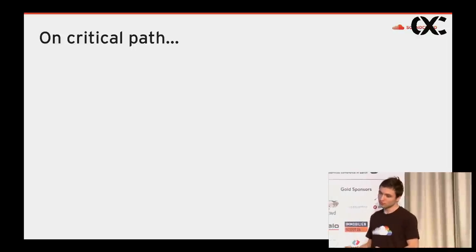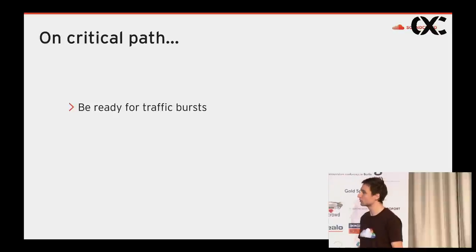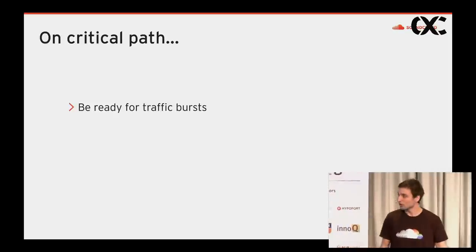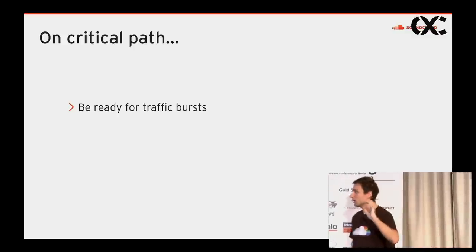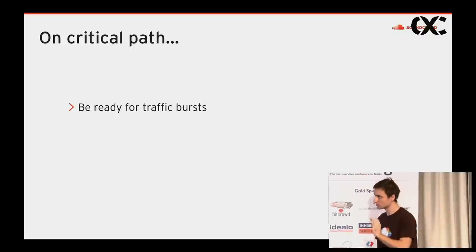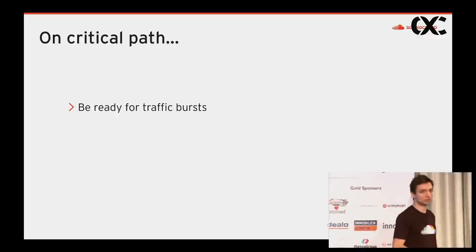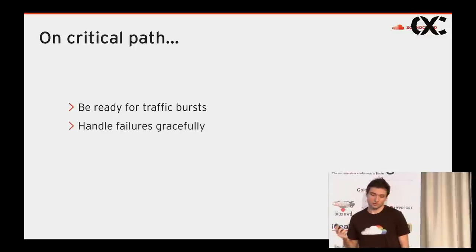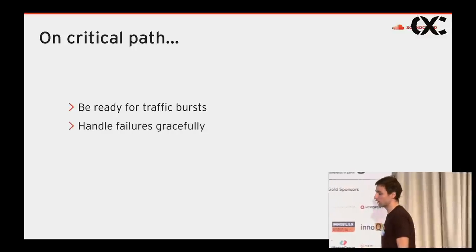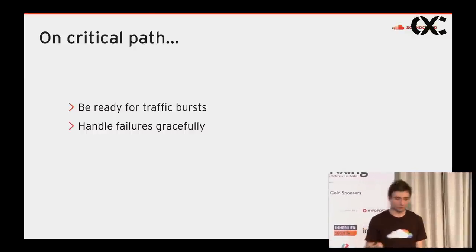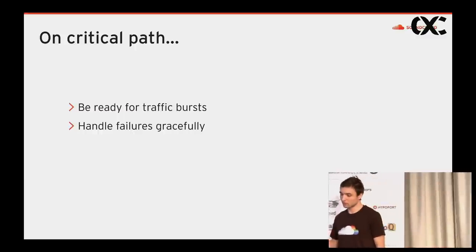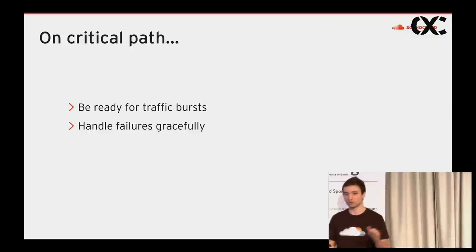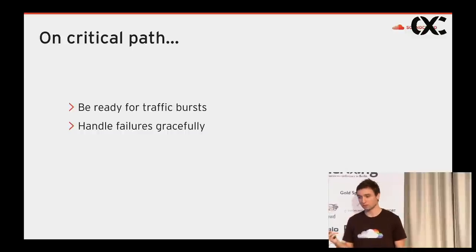There are two things we need to make sure of on the critical path. First, we not only have to scale those microservices to handle 100% of incoming traffic, we also need to over-provision them because SoundCloud's business is prone to traffic spikes. When someone uploads viral content, it creates a huge spike that hits the microservices on the critical path first. We need to be ready for these unexpected situations and be very responsive to incidents on those services.